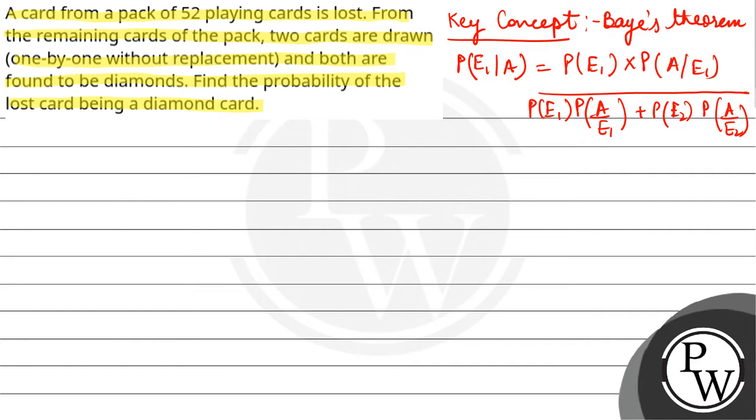Let us consider E1. Let E1 be the event that lost card is diamond. So if we talk about E1, we have 13 cards. So P(E1) equals 13/52 which is 1/4.